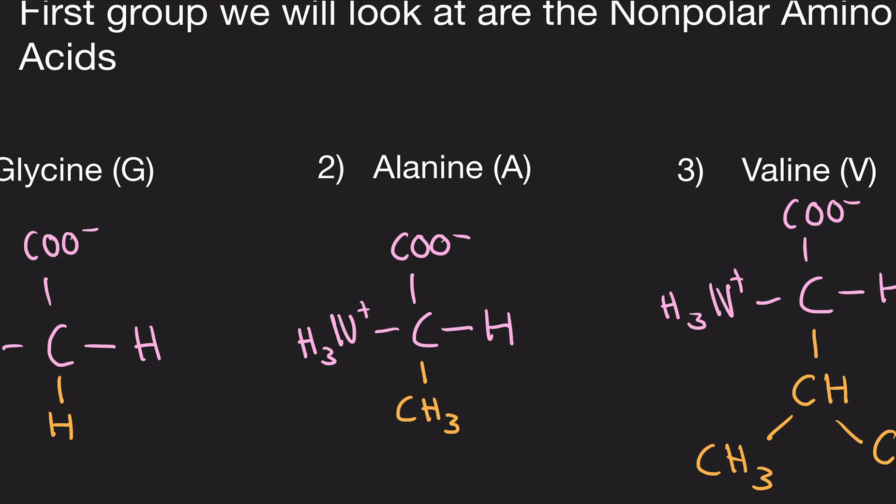Next, we have alanine. So the difference between glycine and alanine is we just have a methyl group now. Instead of a hydrogen, we have a methyl. That's it.